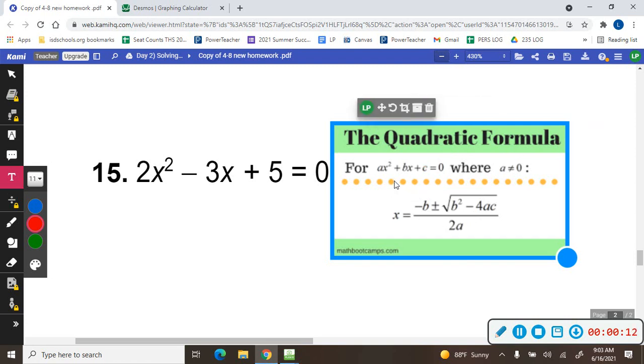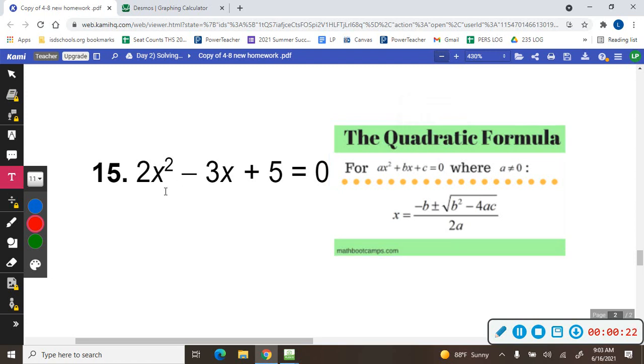In order to use the quadratic formula, it needs to be in the order ax squared plus bx plus c equals 0. And this formula only works if your highest degree is 2. So if this was the third power, fourth power, you could not do it. If it was only to the first, you could also not do it.